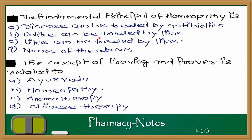Next question: what is the fundamental principle of homeopathy? If you remember the homeopathic system, the principle is that if you have a patient, you give them the same drug that would produce similar symptoms of disease in a healthy person — like cures like. The options are: disease can be treated by antibiotics, unlike can be treated by like, like can be treated by like, and none of the above. The answer is: like can be treated by like — the same drugs are used for the same disease.